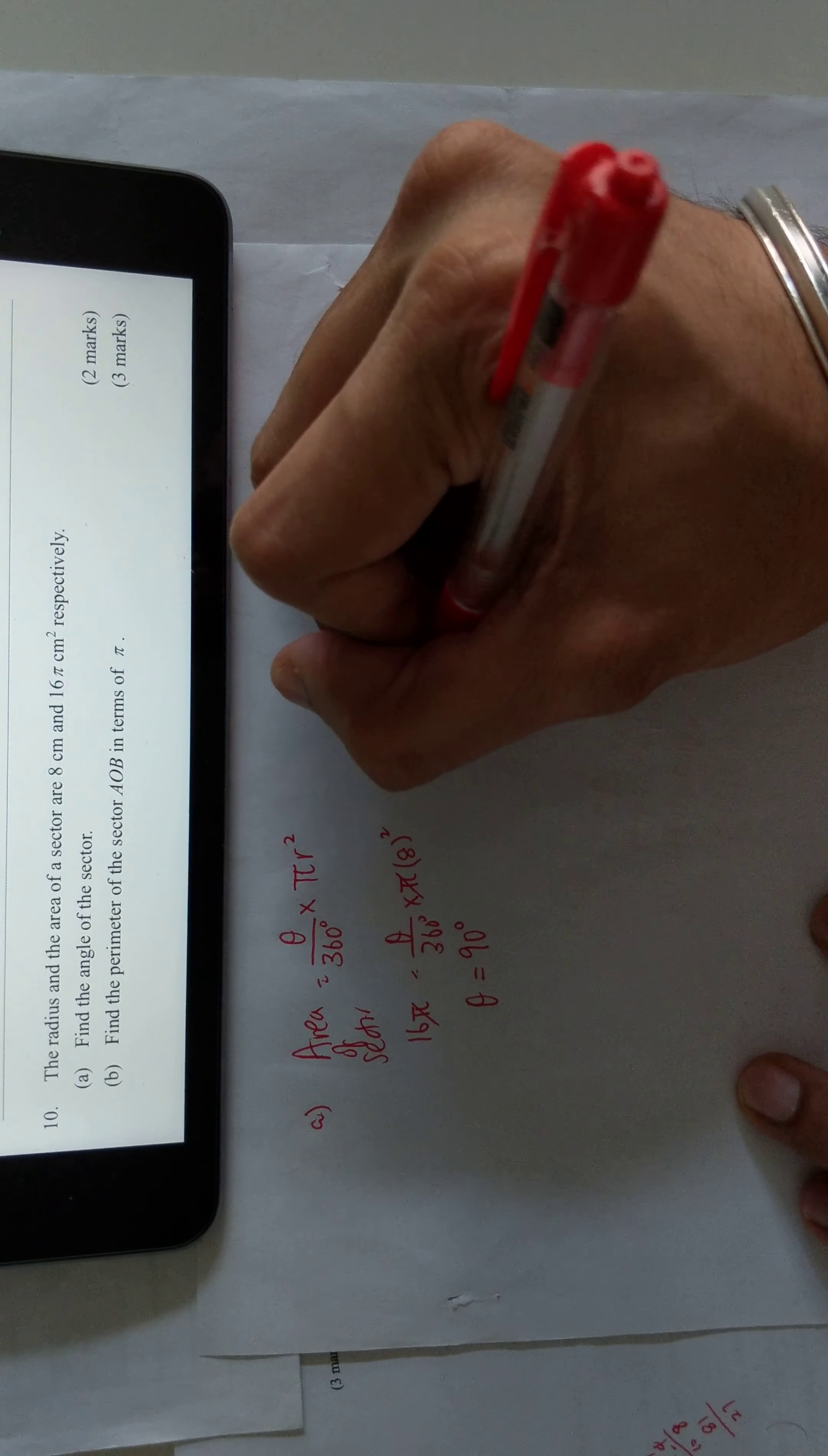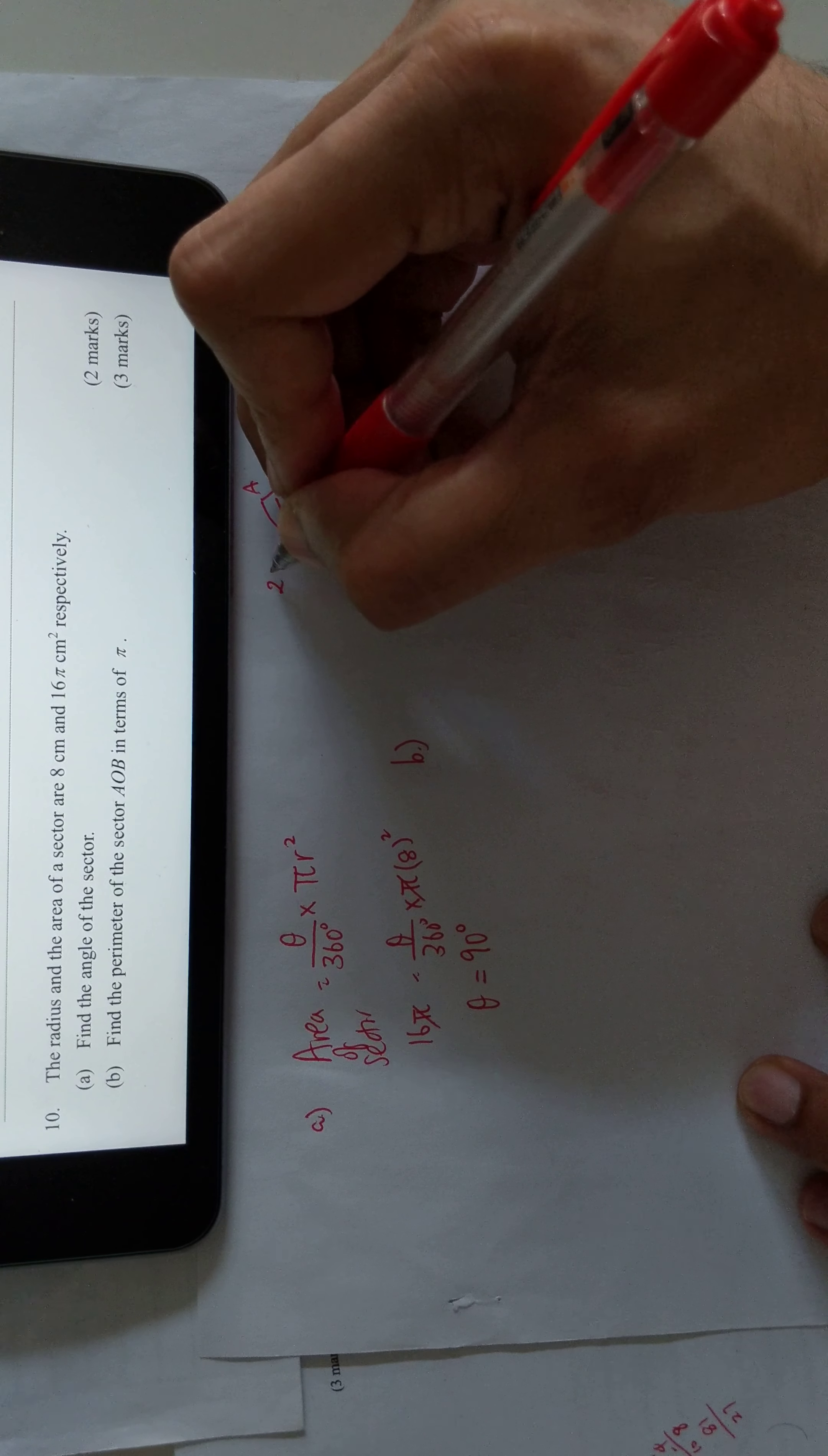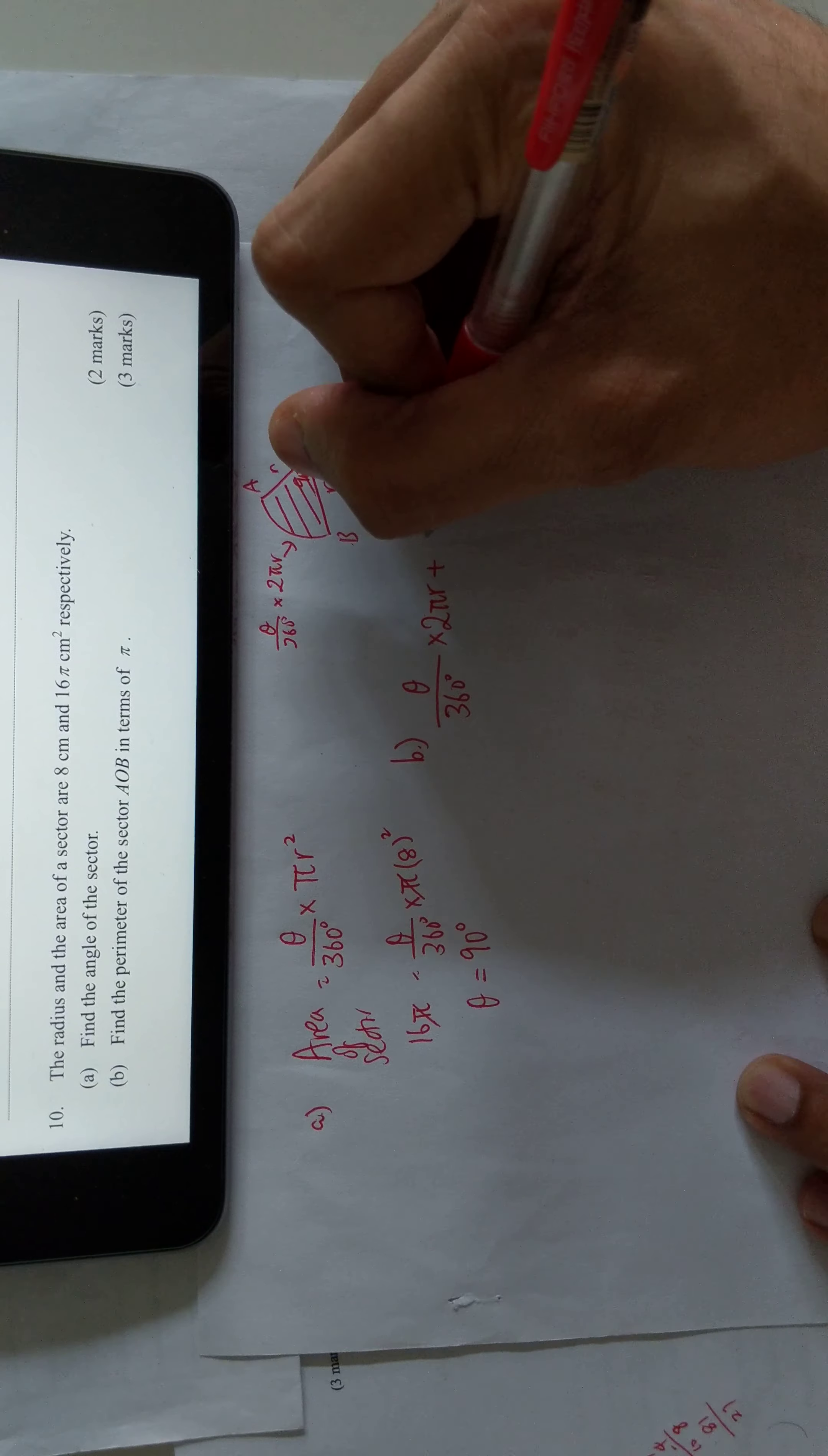In part B, you're finding the perimeter in terms of π for AOB. These are the radiuses, and this is part of the circumference. Circumference is 2πr, and being part of it, it's theta over 360 times 2πr plus 2r, because r plus r is 2r.